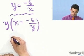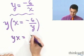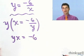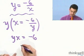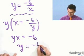So on this side, I see yx. And on the other side, I just see minus 6. Now I divide both sides by x. And I see y equals minus 6 over x.